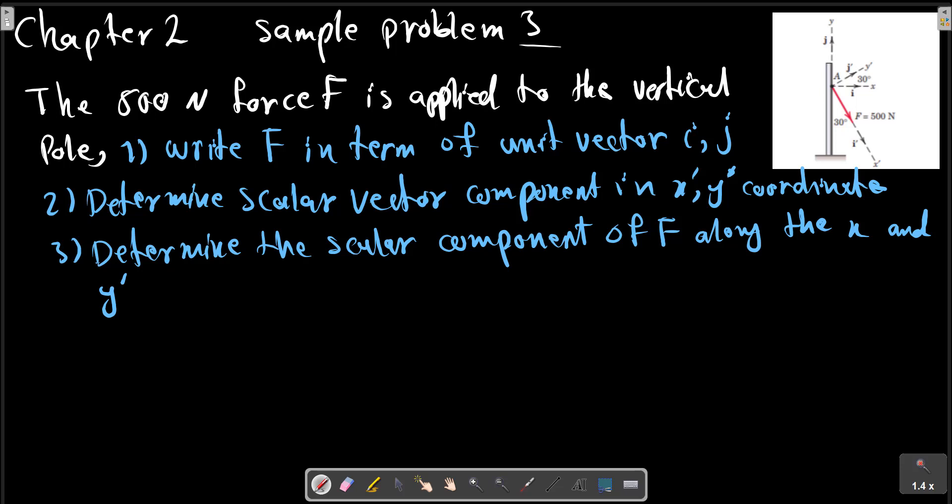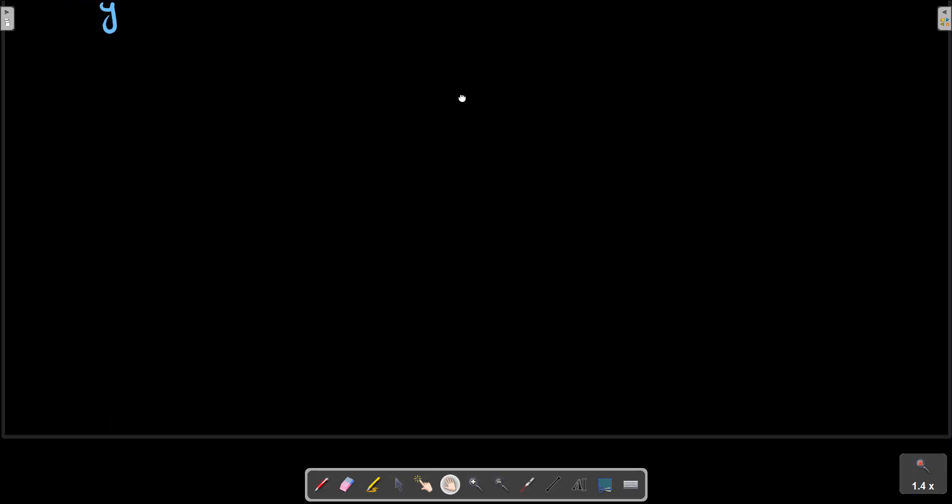Chapter 2, sample problem 3. A 500 newton force F is applied to a vertical pole as shown in the picture. Determine: 1) write F in terms of unit vectors i and j; 2) determine the scalar vector components in the x-prime and y-prime coordinate as shown in the picture; 3) determine the scalar component of F along x and y-prime. This is a problem with three sections.